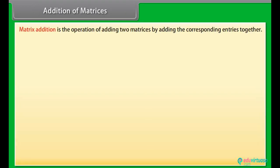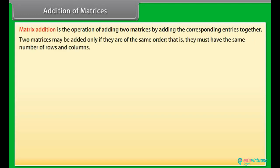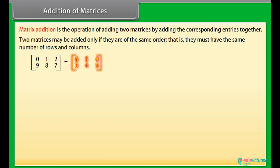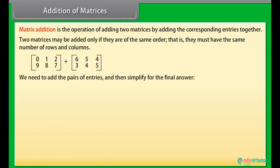Addition of matrices: Matrix addition is the operation of adding two matrices by adding the corresponding entries together. Two matrices may be added only if they are of the same order — they must have the same number of rows and columns. Let's add these two matrices.